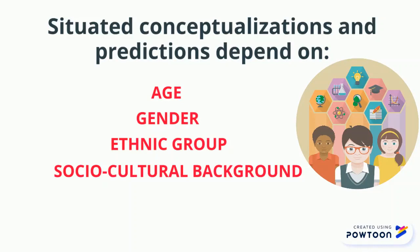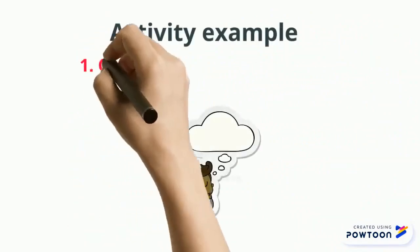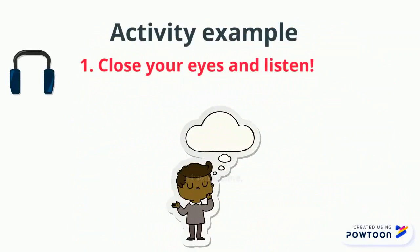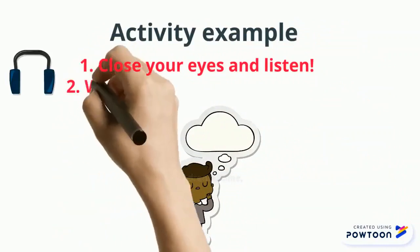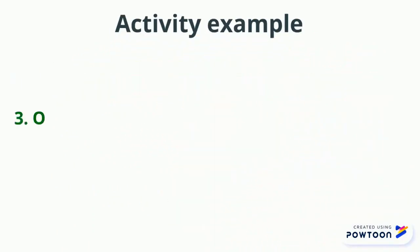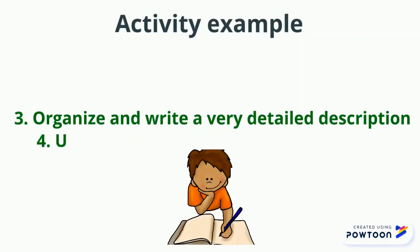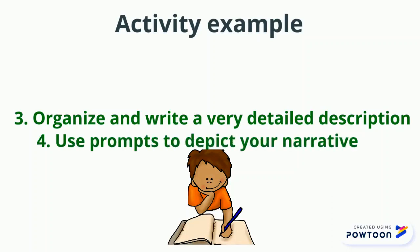As a classroom activity example, students will close their eyes and listen twice to an audio story told with sound effects. The third time, they will write whatever situations come to their minds. Then they will organize the information and write a narrative, bearing in mind that readers will need a great number of details to picture a mental image similar to the one they have described. Writers will also use a website or drawing — depending on age or time available — to depict the narrative.